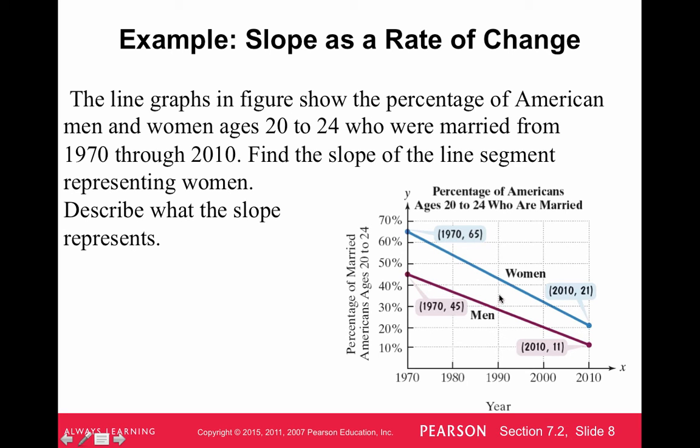So if we have these two lines here showing the percentage of American men and women that are age 20 to 24 who were married from 1970 through 2010, it says find the slope or rate of change of the lines. So we'll ask you, find the rate of change of the line segment representing women. Describe what the slope represents. So we can look at these two endpoints.